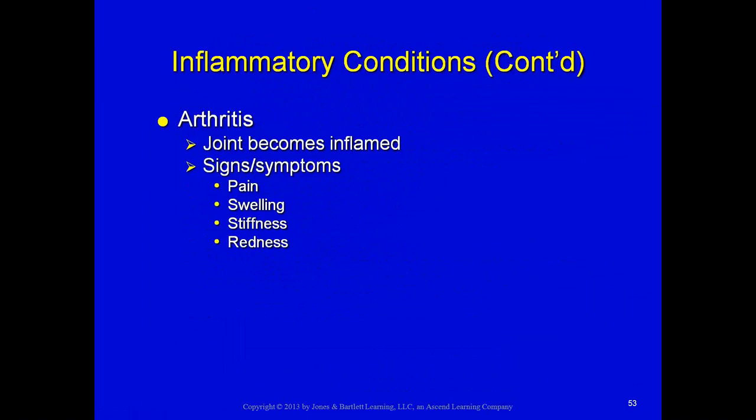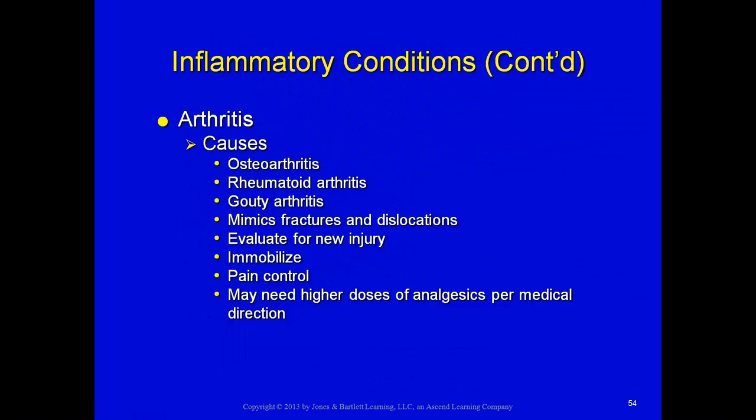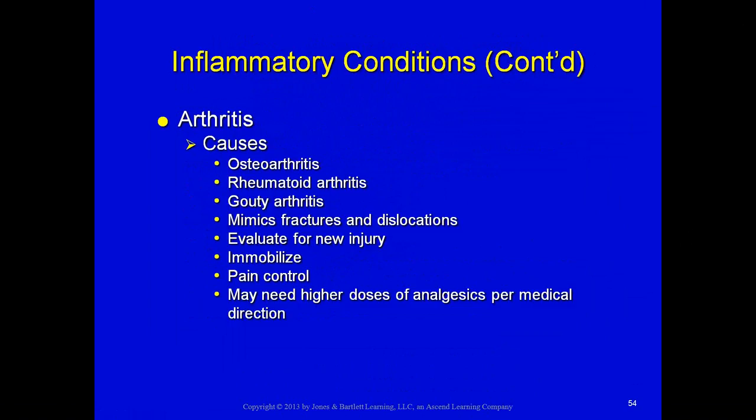Arthritis involves inflammation of the joint. Signs and symptoms are pain, swelling, stiffness, and redness. It is caused by osteoarthritis, rheumatoid arthritis, or gouty arthritis. Arthritis can often mimic fractures and dislocations, so you must evaluate whether the pain in an arthritic area is new or chronic. If it is new and you suspect a fracture, immobilize, give pain control medication — and patients may need higher doses of analgesics given the significance of pain associated with arthritis.